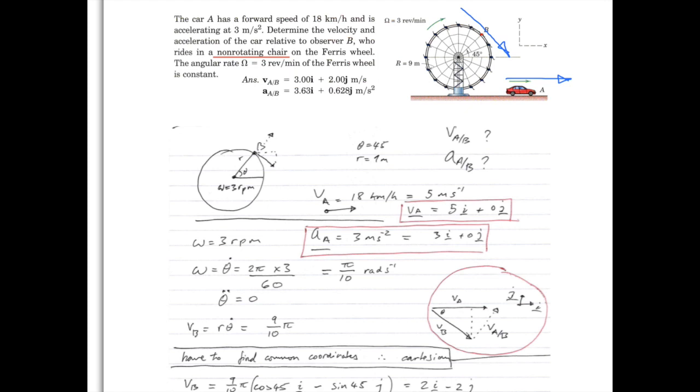So to get the vector of the speed of the car, we convert our speed of 18 kilometers an hour into 5 meters per second, using our factor of 3.6. So we get our vector for A of 5i plus 0j, because it's going horizontally, and x and y are defined as shown. And the acceleration is given to be 3 meters per second also in that direction, so similarly our acceleration vector is 3i plus 0j.